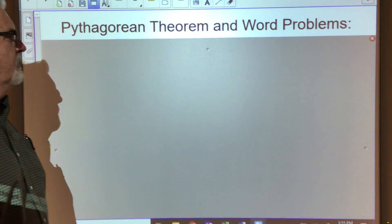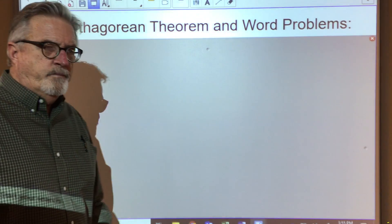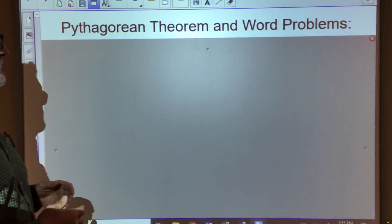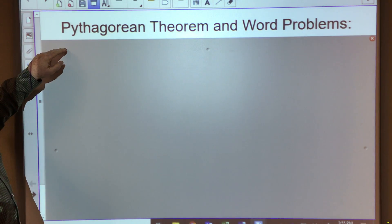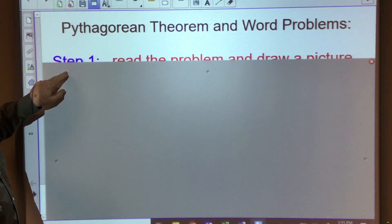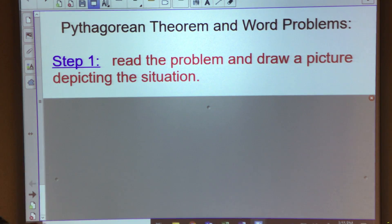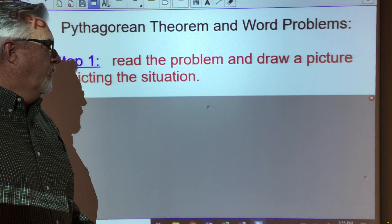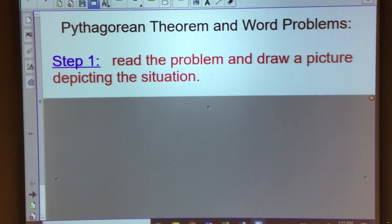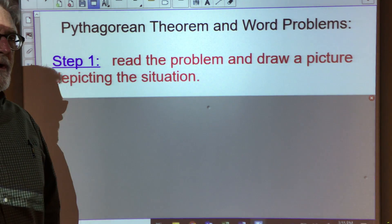So I want to go over just a couple of steps that we'll be using today with the Pythagorean Theorem and word problems. Step number one is simply to just read the problem and draw a picture depicting the situation. So we're going to have to read through it and then we're just going to sketch a picture of what we think it looks like and we're going to include any measurements that are given.